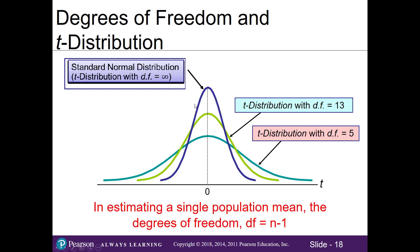Here in the blue is our standard normal distribution. We've got two examples of t-distributions at different degrees of freedom. The t-distribution is defined by the degrees of freedom, and as our degrees of freedom increases, the t-distribution gets closer to the normal distribution. In other words, the bigger the sample, the closer we get to the normal distribution.